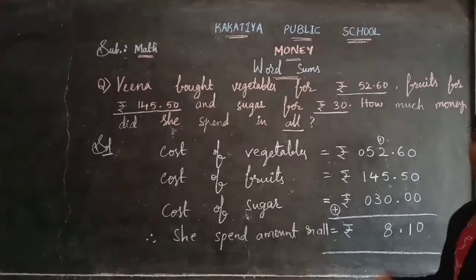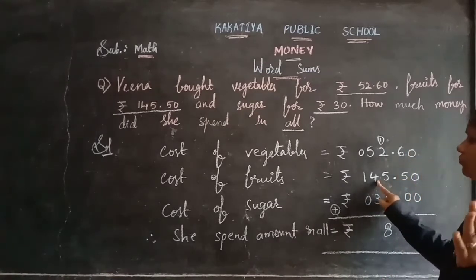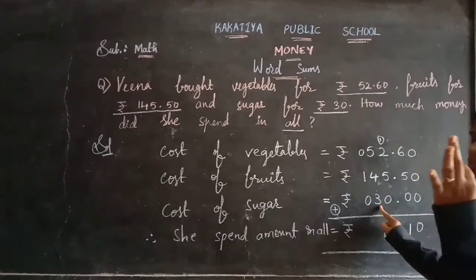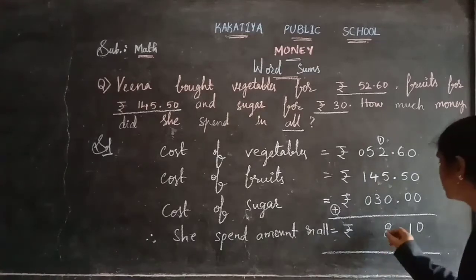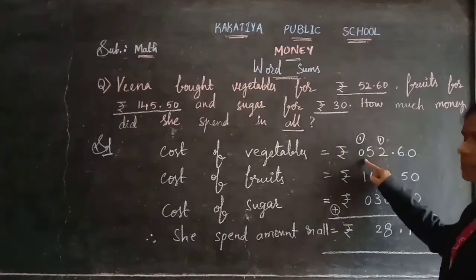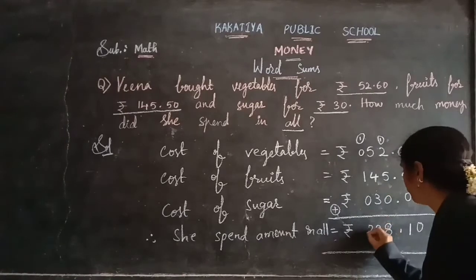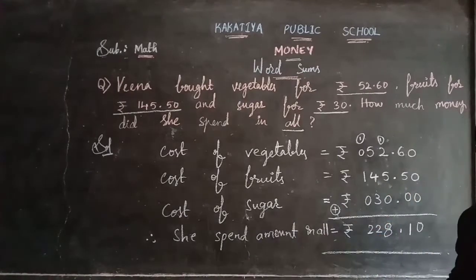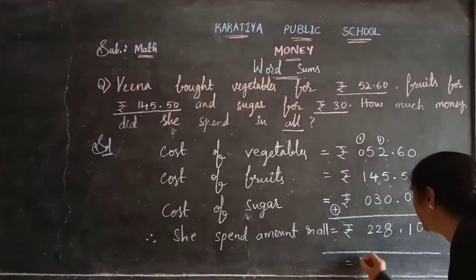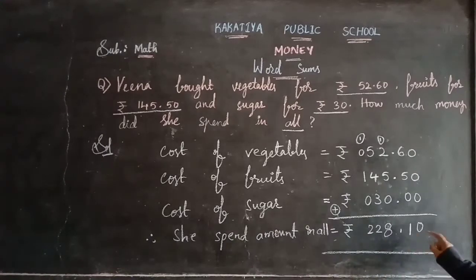Now 5 plus 4 plus 3 — counting from 5, next 4 gives 9, then next 3 gives 12. So 12 is a two-digit number; write 2 here and carry 1. Now 1 (carry) plus 0 plus 1 plus 0 equals 2. So the total amount she spent on all three items is 228 rupees 10 paise.